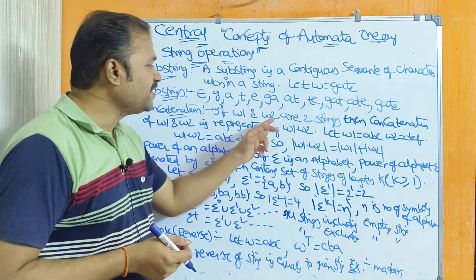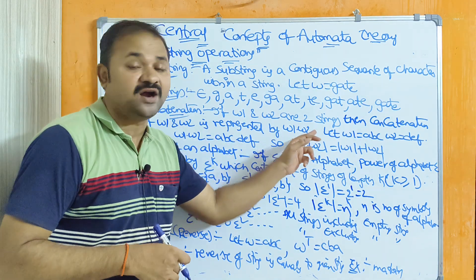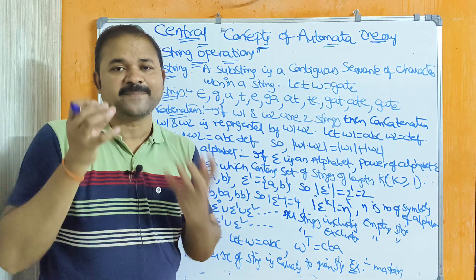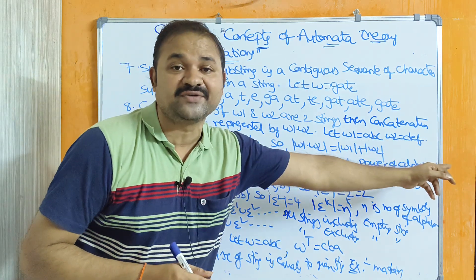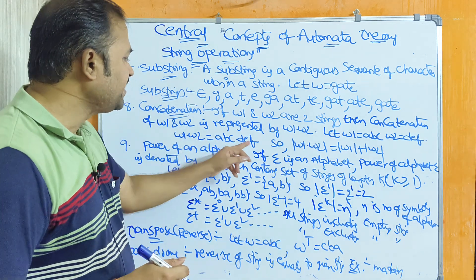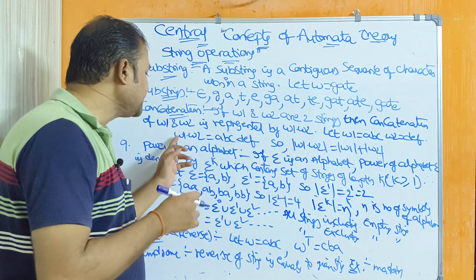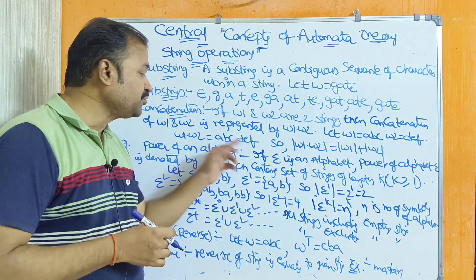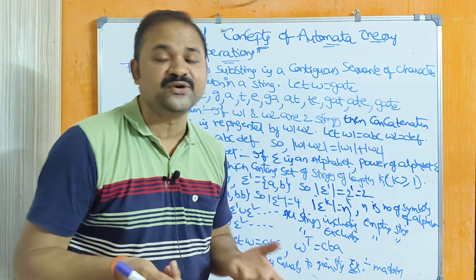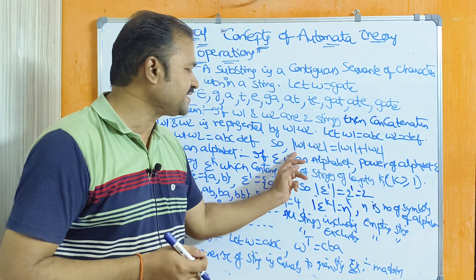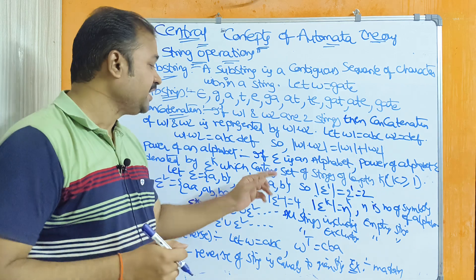The next operation is concatenation. If w1 and w2 are two strings, then the concatenation of w1 and w2 is represented by w1·w2. Concatenation means joining — appending the second string at the end of the first string. Let w1 equal to abc and w2 equal to def, then w1·w2 equals abcdef. The length |w1·w2| equals 6, because |w1| is 3 and |w2| is 3. So |w1·w2| equals |w1| plus |w2|.